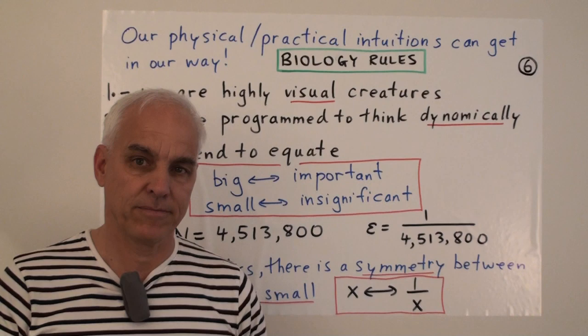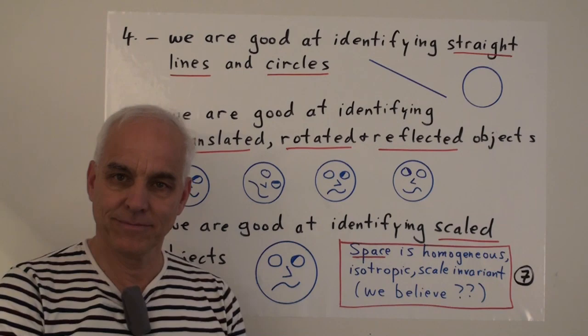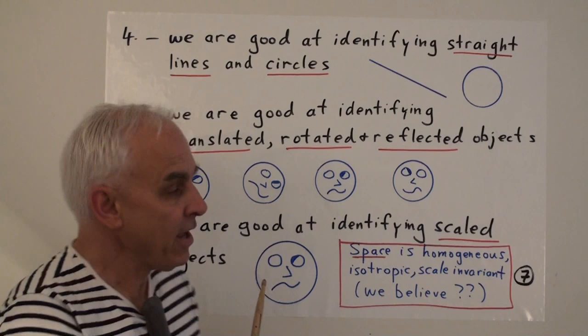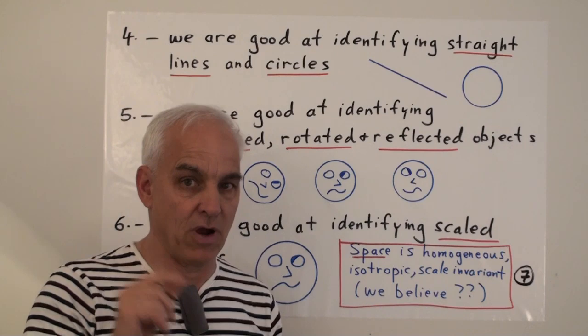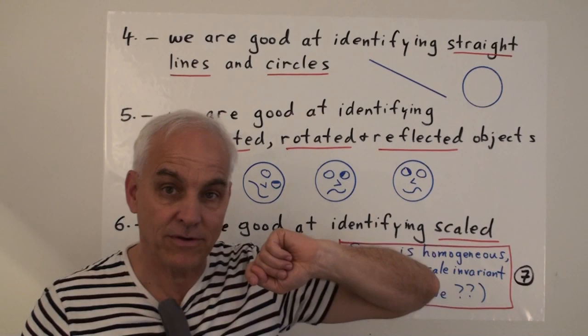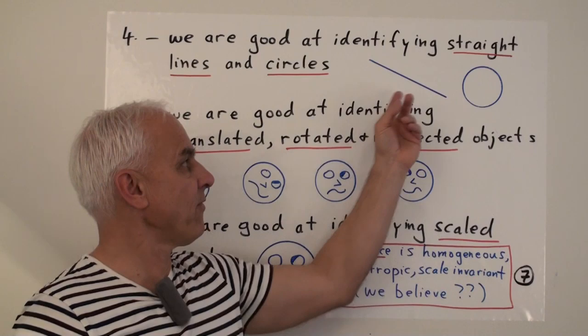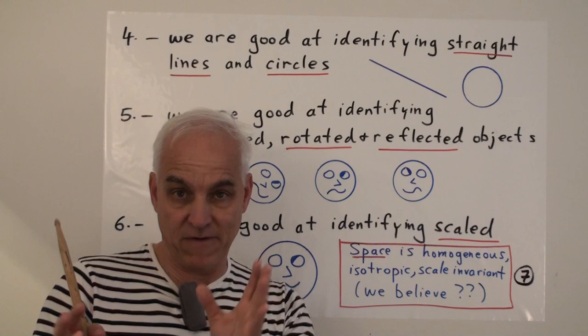But there are many other aspects of this story. Another interesting aspect of our biology is that we are very good at identifying straight lines and circles. You can all see that this is a straight line. You can all see that this is a circle. If I had changed this straight line, for example, if I had drawn it by hand instead of with a ruler, you'd all be able to see that this is probably not exactly a straight line. And certainly, if I drew a circle freehand, even if I tried to do it very accurately, you'd be able to tell that this was a freehand circle. Maybe this explains why the ancient Greeks were so enamored of circles and lines.